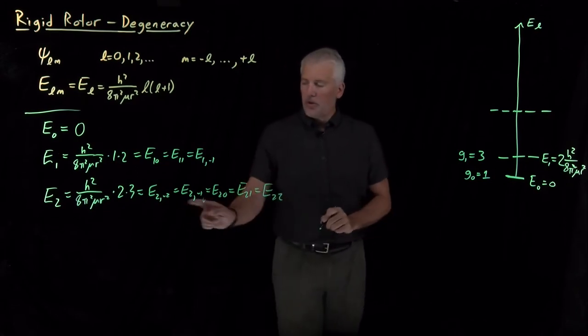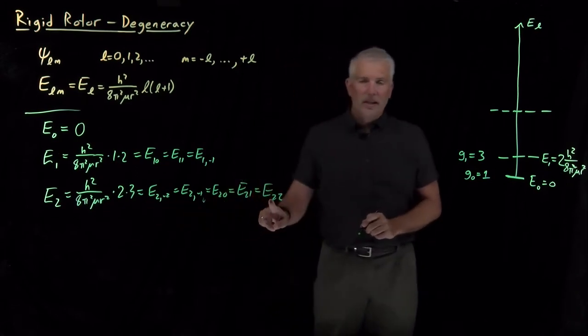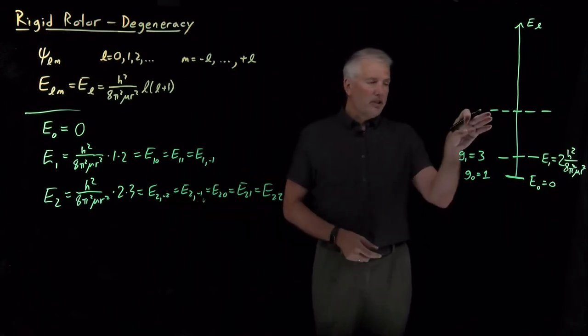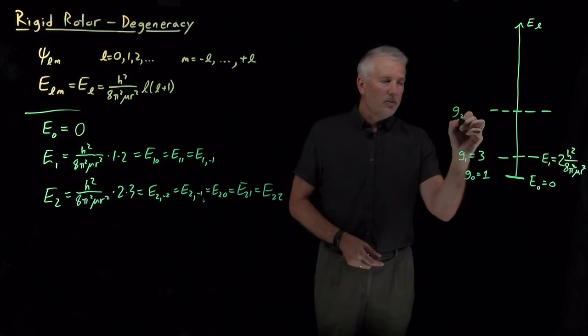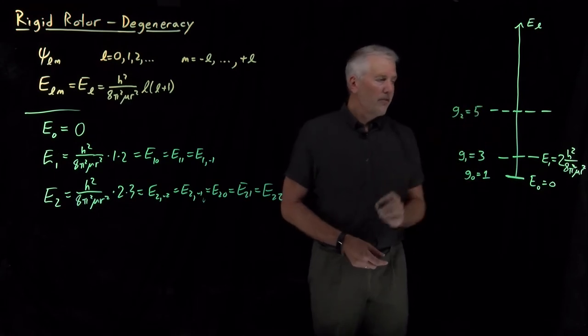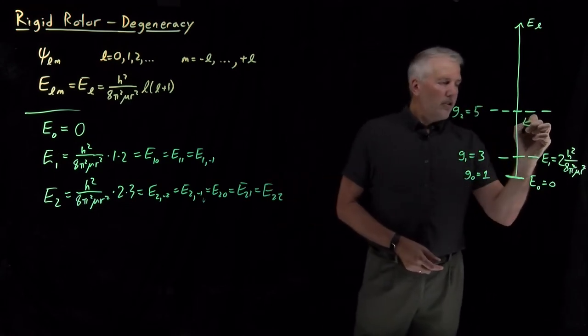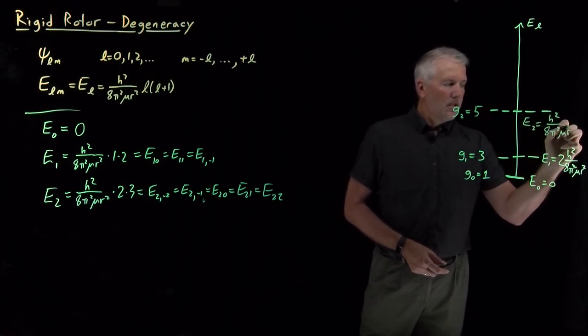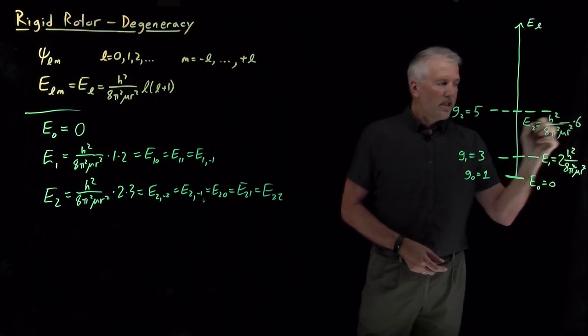So, there's one, two, three, four, five states that all have five wave functions, five states that all have the same energy as each other. So, the degeneracy of the L equals 2 level is five, the energy of the L equals 2 level is constants times 6.